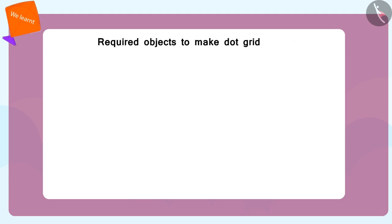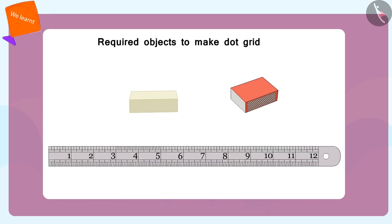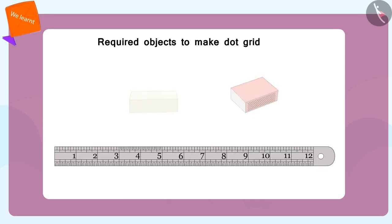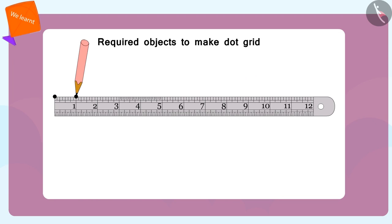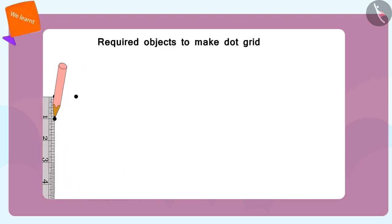If you do not have a dot grid, you can make it by using everyday items. Just place the points next to each other and on equal distance under each other.